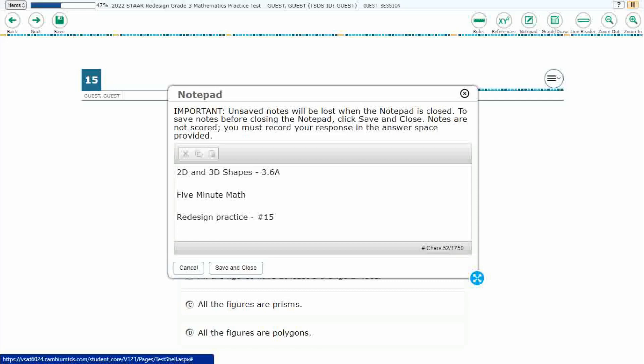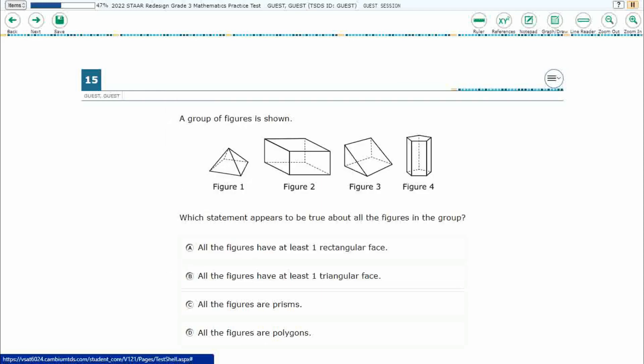Hello and welcome to 5-Minute Math. Today we are looking at the third grade concept of two-dimensional and three-dimensional shapes. This is standard 3.6a in the great state of Texas and we are using item number 15 of the Redesign Practice Online Star Test.